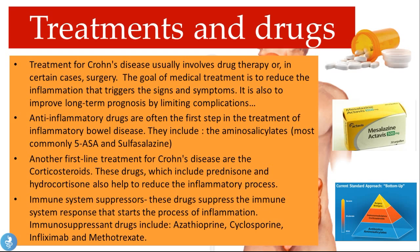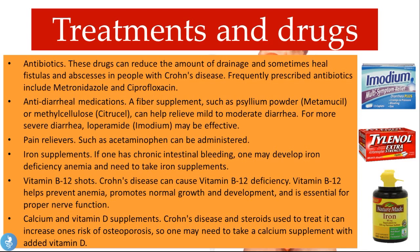Antibiotics such as metronidazole and ciprofloxacin can reduce drainage and sometimes heal fistulas and abscesses. Antidiarrheal medications like psyllium powder or methylcellulose help with mild to moderate diarrhea, while loperamide may be effective for more severe diarrhea. Pain relievers such as acetaminophen can be administered. Iron supplements may be needed if chronic intestinal bleeding causes iron deficiency anemia. Vitamin B12 shots address B12 deficiency caused by Crohn's disease, helping to prevent anemia and support normal growth and nerve function. Calcium and vitamin D supplements counter the increased risk of osteoporosis from Crohn's disease and steroid treatment.